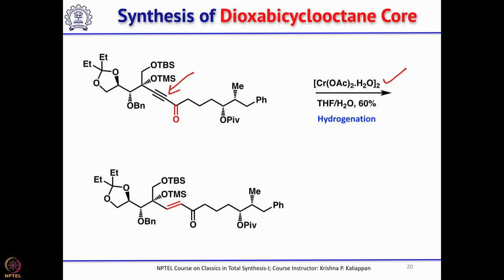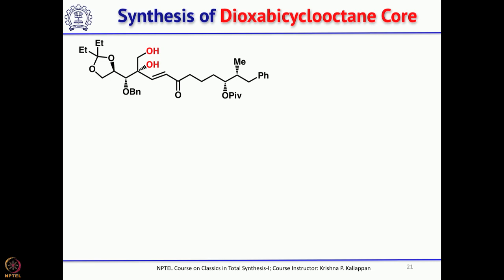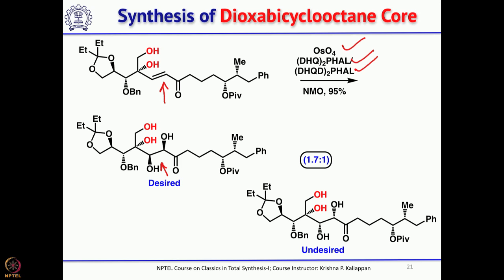The triple bond is reduced to the trans double bond. Treatment with tetrabutylammonium fluoride removes both TMS and TBS groups to give the diol. The resulting enone is subjected to Sharpless asymmetric dihydroxylation, which gives the major product with the two hydroxyl groups coming from the beta side, along with some of the alpha diol. The desired beta diol is taken forward.